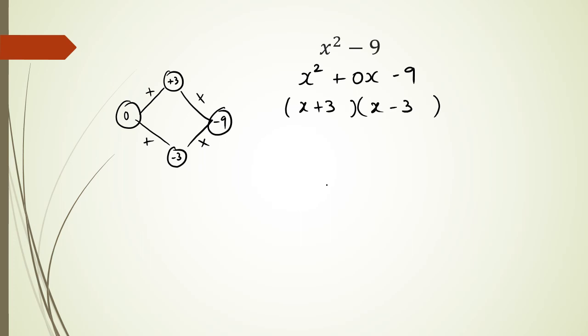Because positive 3 times negative 3, that's negative 9, and positive 3 plus negative 3 is going to be 0. So that kind of works out.